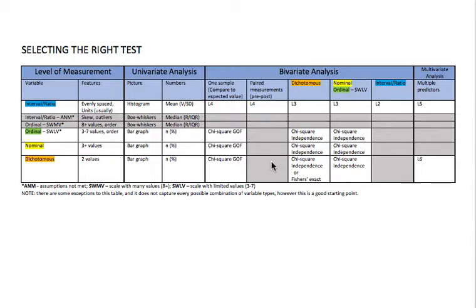To get us started, I'd like for you to think about the whole concept of selecting the right test. With this concept, you cannot pick the right test to perform in statistics unless you know your level of measurement for each of the variables. This table helps summarize some of the things we've learned so far. A dichotomous variable has two values, a nominal variable has three or more values. An ordinal scale with limited values has three to seven values in some kind of inherent order — like a Likert scale.